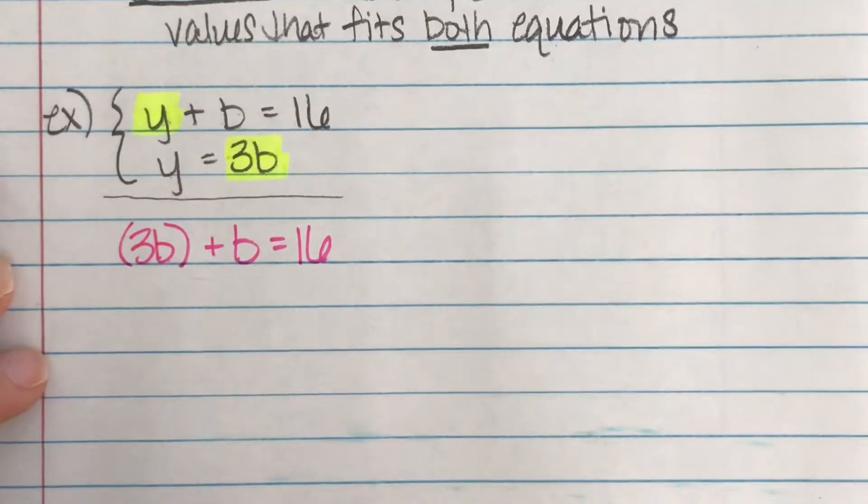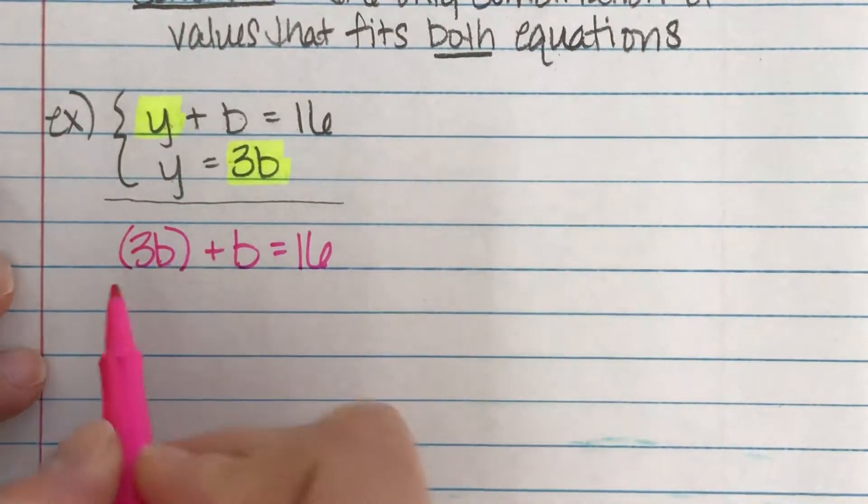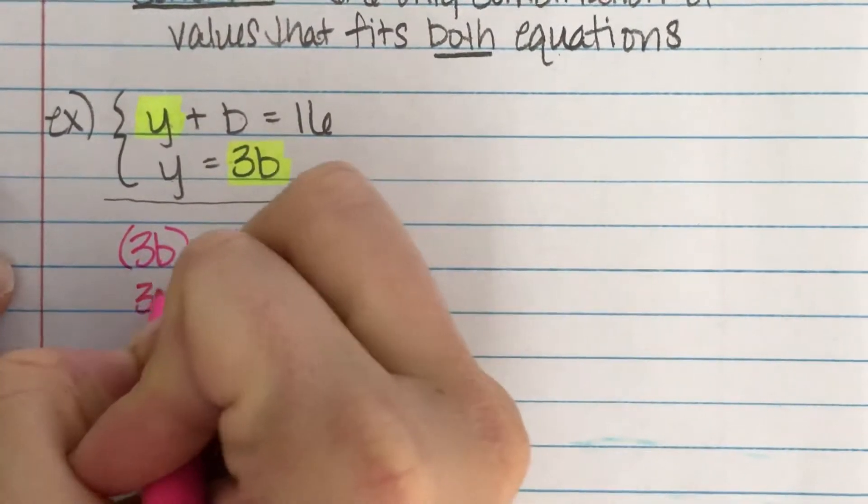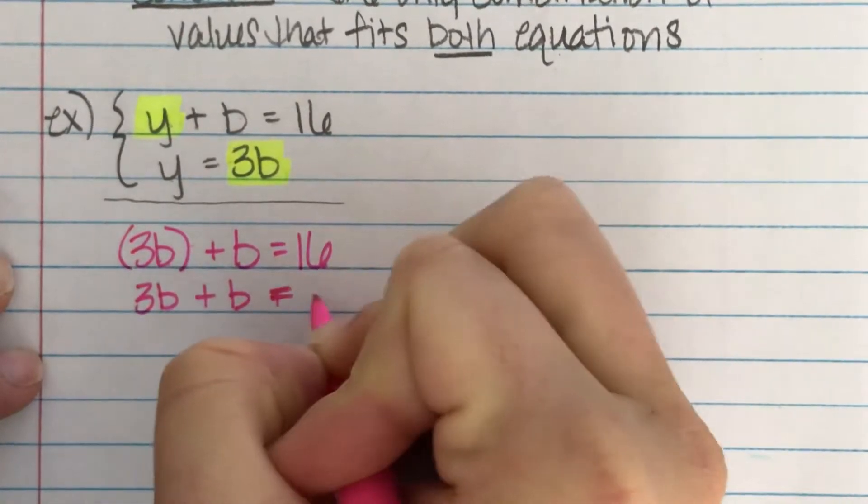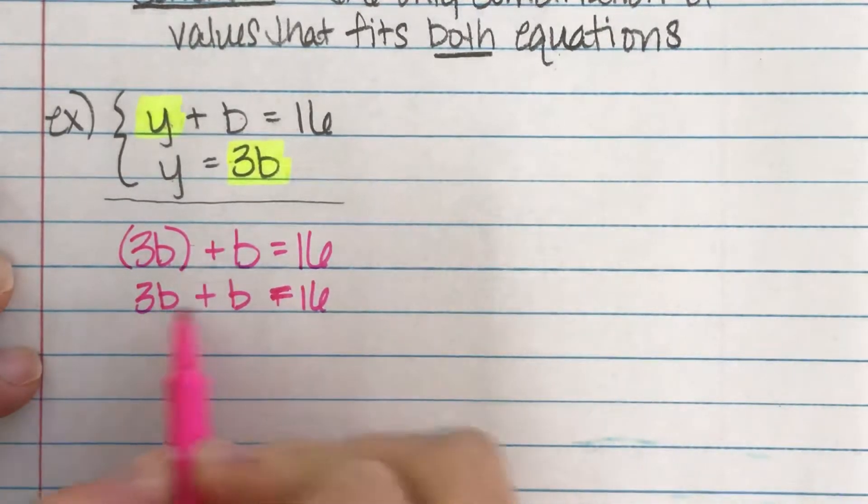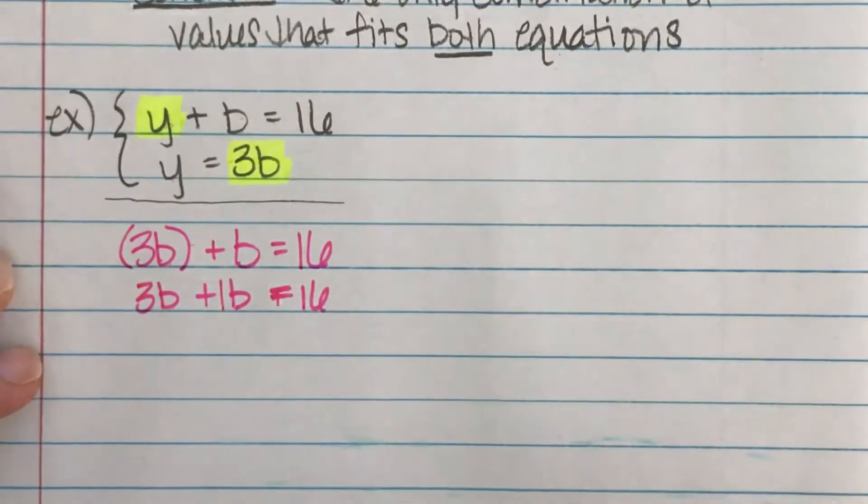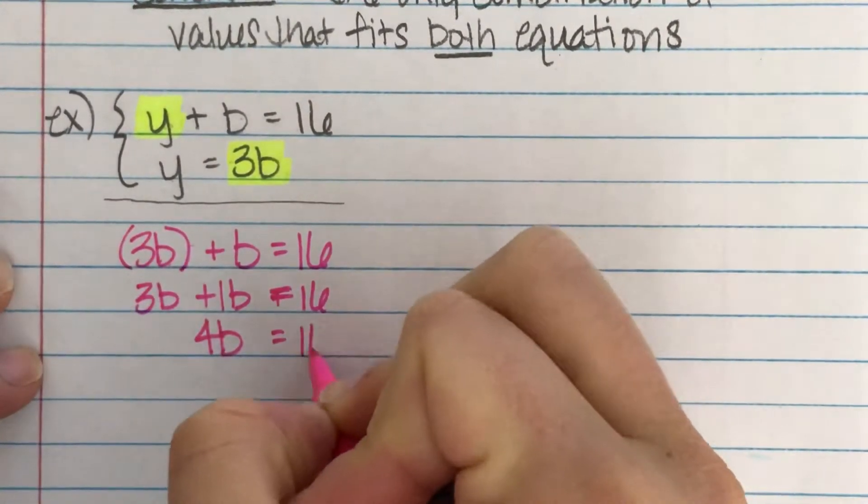So this is a simple equation that I can solve. I put parentheses around it because anytime you substitute, I want you to put parentheses, but nothing's really being distributed here. So I can kind of ignore them and just say, really what I have is 3b plus b equals 16. Three b plus b, I can clean that a little bit.